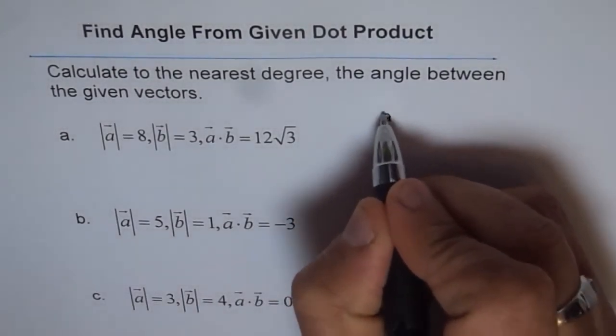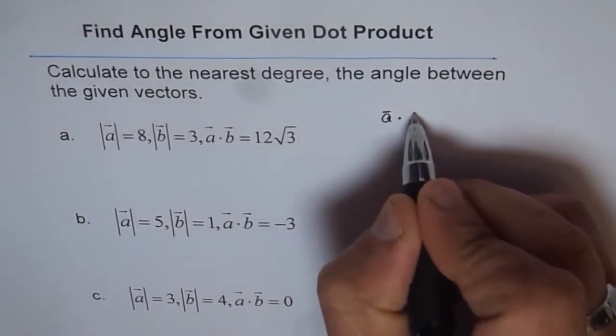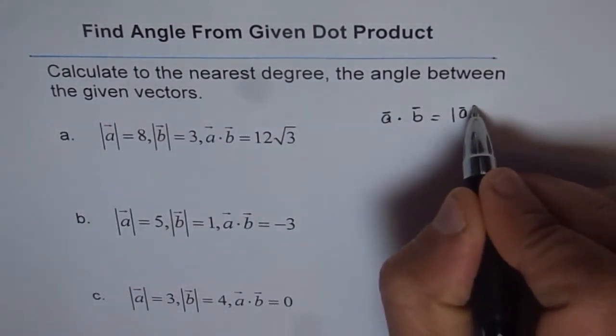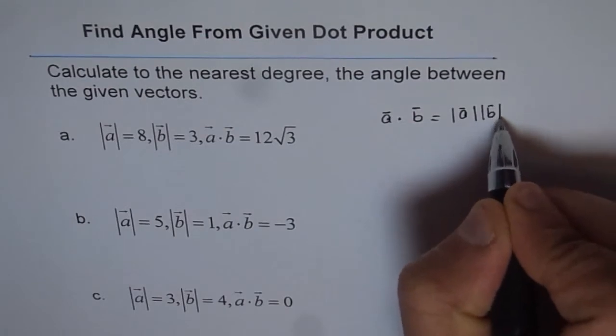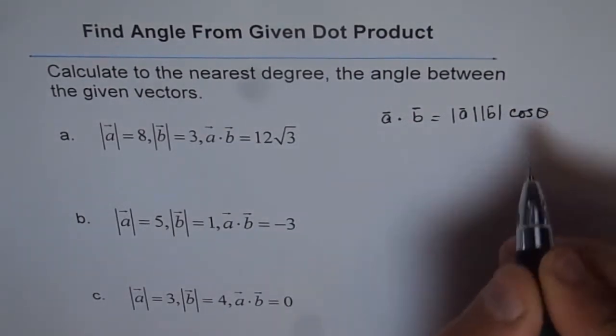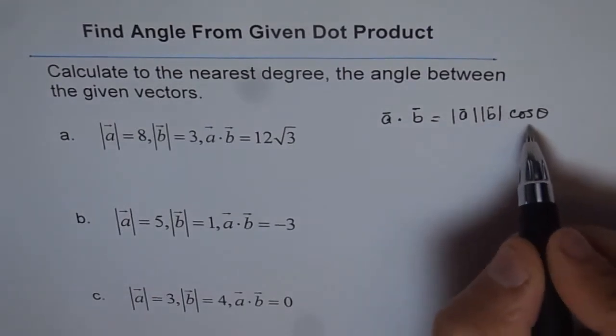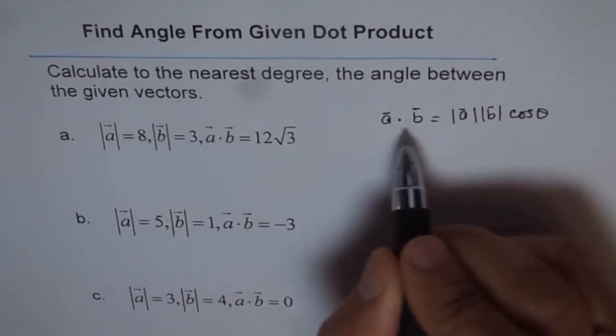Now, as you know by definition, let's say the vectors are a and b. If we have vector a dot vector b, the result is magnitude of a times magnitude of b times cos of theta, where theta is the angle between the two vectors.